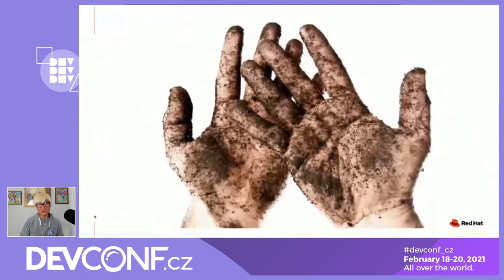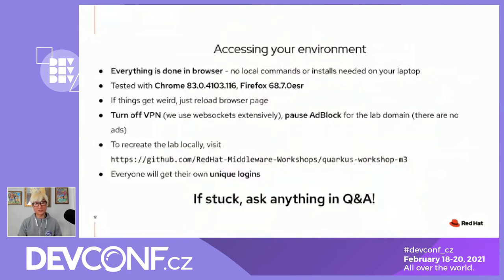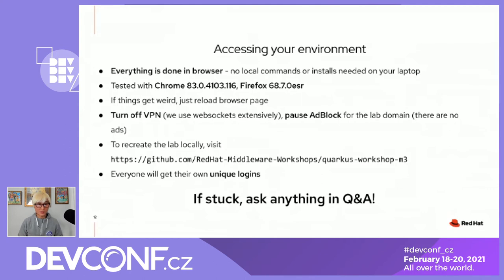Now let's get your hands dirty. Here is how to access your workshop environment today. Everything is already deployed and provisioned — you don't need to install any command-line tools or software. You just need a web browser. Chrome or Firefox is recommended over Safari or Internet Explorer. I strongly recommend using Chrome. Please turn off your VPN or ad blocker because we're going to use WebSocket — if you block the WebSocket protocol, please disable it during the workshop.